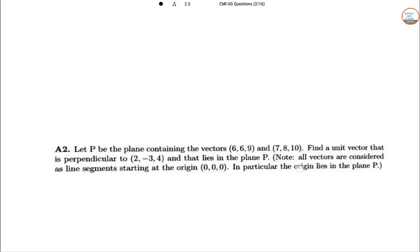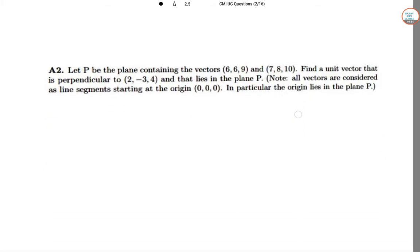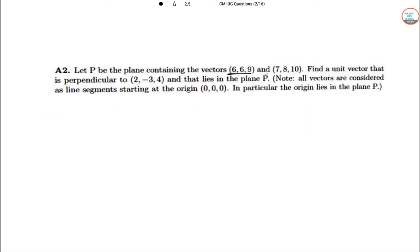Let P be the plane consisting of vectors (6, 6, 9) and (7, 8, 10). Two vectors. Find the unit vector that is perpendicular to (2, -3, 4) and that lies on a plane P. And we have to note that all vectors considered in the line segments starting with the origin (0, 0, 0) in a particular origin of P. So not much.